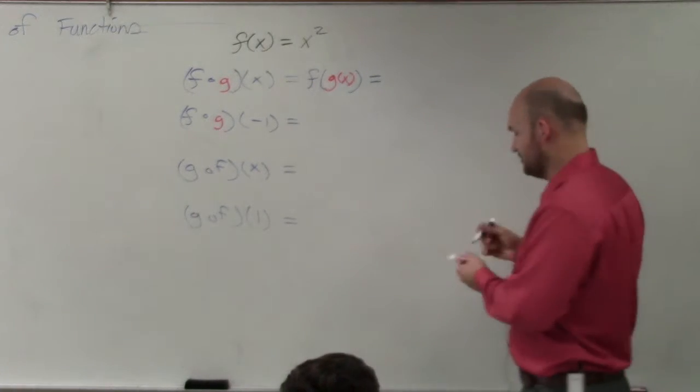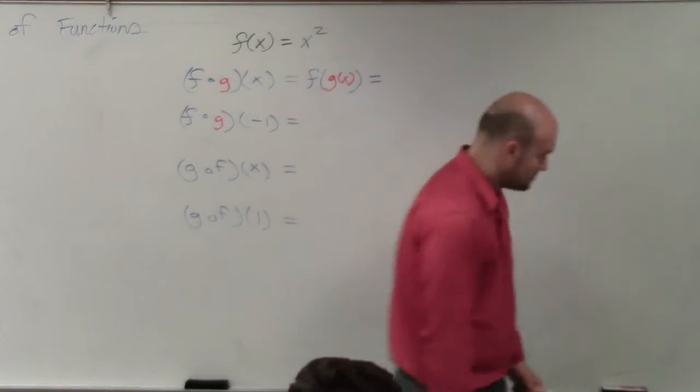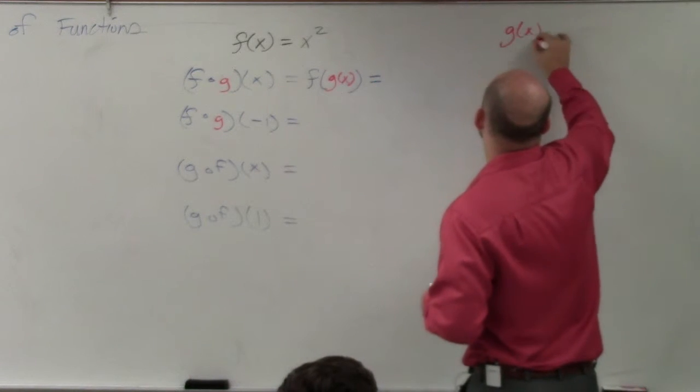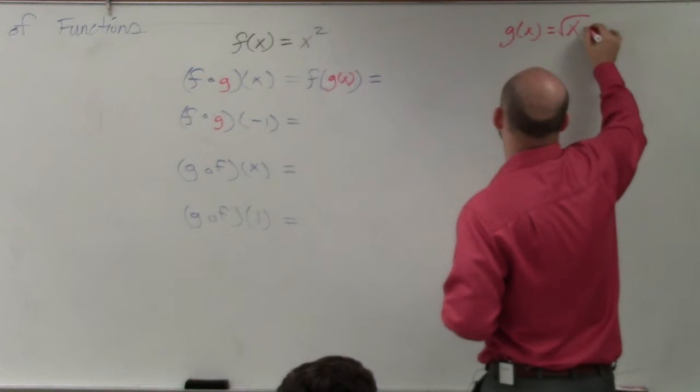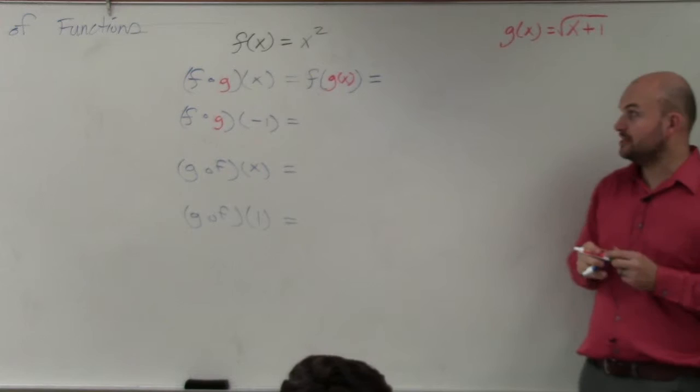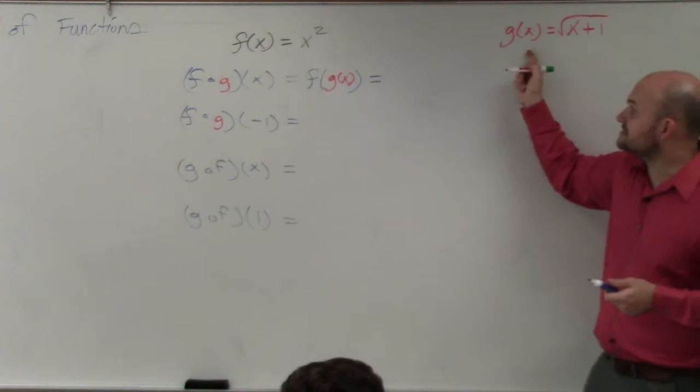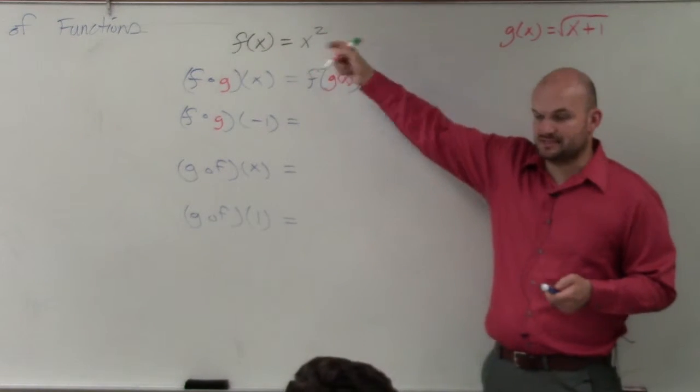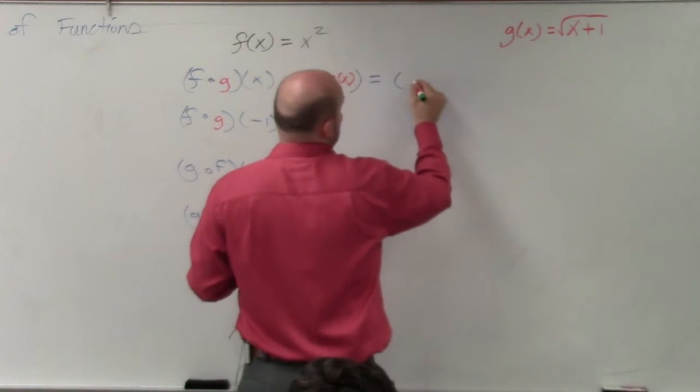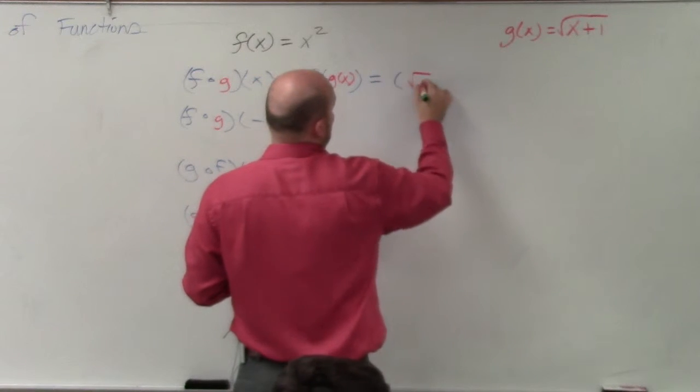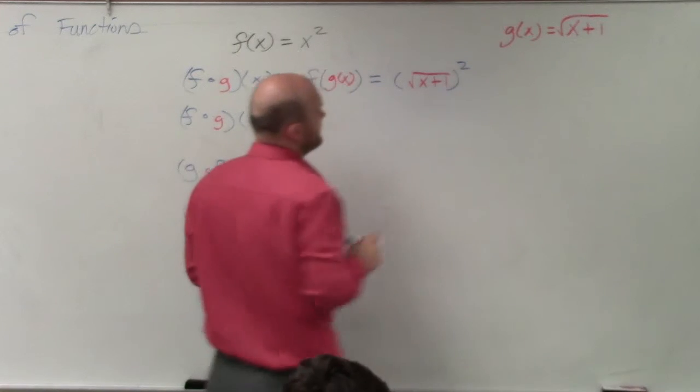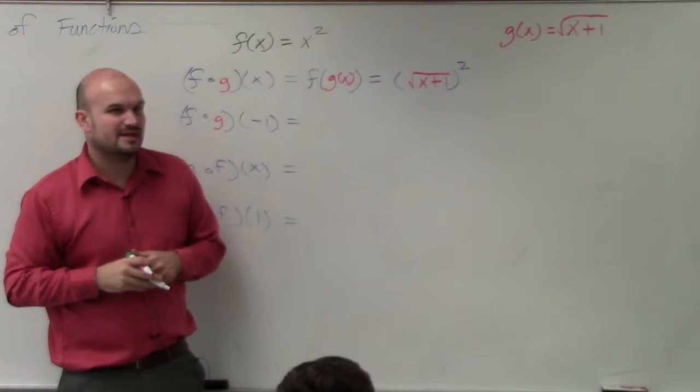Oh, shoot. I erased g of x. Oh, let's call it g of x here. Let's use red. g of x equals the square root of x plus 1, right? OK. So now I'll use color coding to help you guys out. So now we're going to plug f of x and plug it in for g of x. So basically, it is now going to be g of x square root of x plus 1 squared.